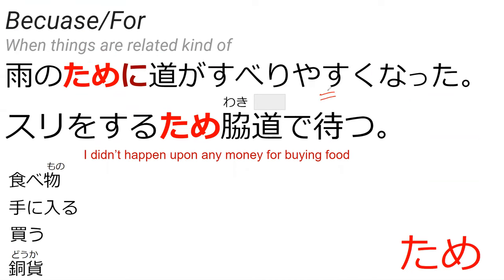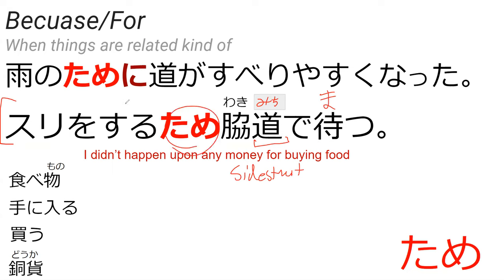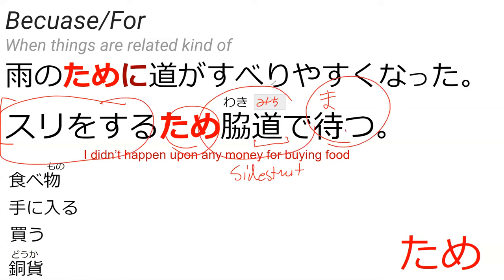This right here is the example for 'for.' Could you read this for me? 'Suri wo suru tame, wakimichi de matsu.' Right. So in this context, wakimichi means side street, basically the same as an alleyway. So 'suri wo suru tame, wakimichi de matsu' means 'for the purpose of pickpocketing, I will wait in a side street.'